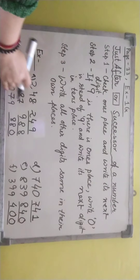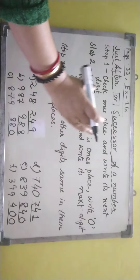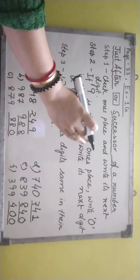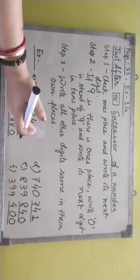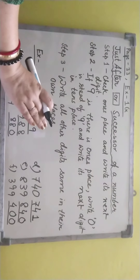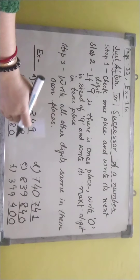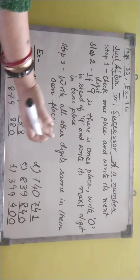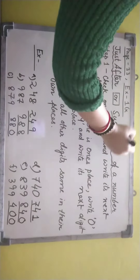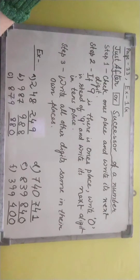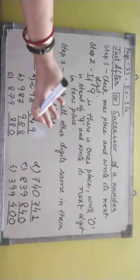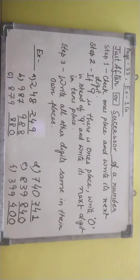So what you have noticed: predecessor means minus 1 — that is just before a number. Suppose 5: just before 5 is 4, which is 5 minus 1. And just after 5, that is successor, is plus 1 — 5 plus 1 equals 6. Successor means plus 1 and predecessor means minus 1. I think you have understood these two things — just after and just before. That's all for today. Thank you.